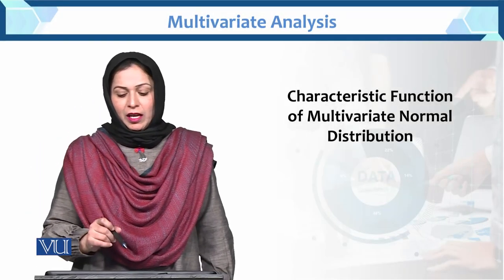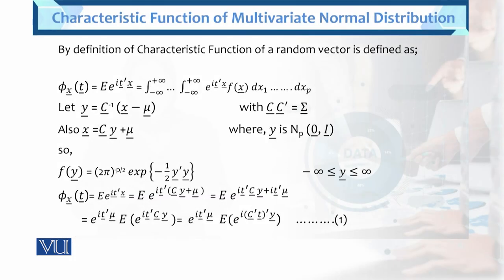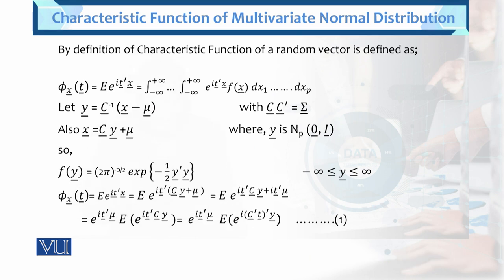Dear student, here we will learn the characteristics function of multivariate normal distribution. What is the difference between the moment generating function and the characteristics function of multivariate? The characteristics function completely determines a probability density function, but the moment generating function of every probability distribution may not exist. However, the characteristics function of every probability density function does exist.